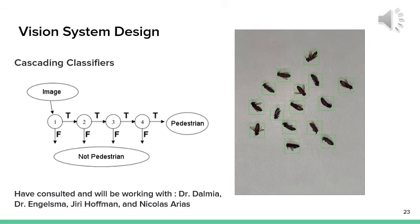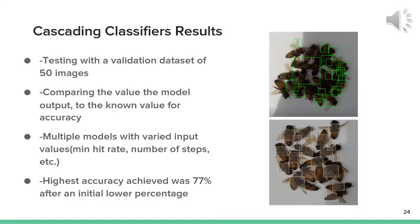The second method that was explored is called cascading classifiers. This method uses annotated images to create a classification profile for the desired objects. Using this profile to determine if the grouping of pixels is in fact the desired object. This is done by separating the classifications into multiple stages, each with a specific feature of the object it is looking for. If the object possesses the feature, it passes through that stage and on to the next until it either fails one or makes it all the way through. Multiple cascading classifier models were created using varied input values from the OpenCV library. We used the validation data set of 50 images to determine the accuracy of each model. The highest accuracy achieved was 77%.